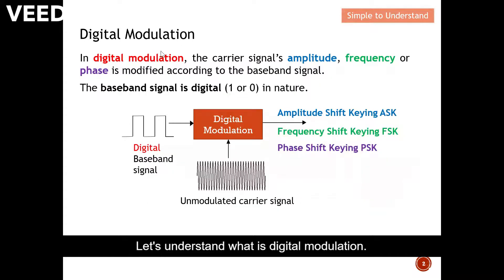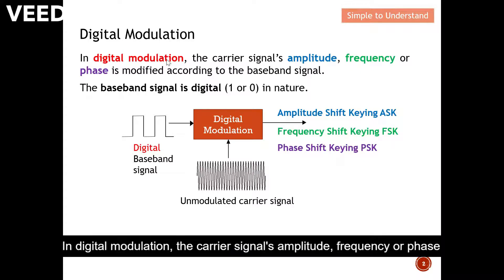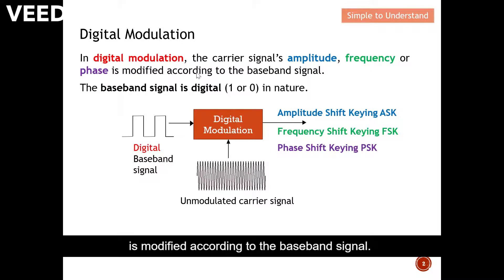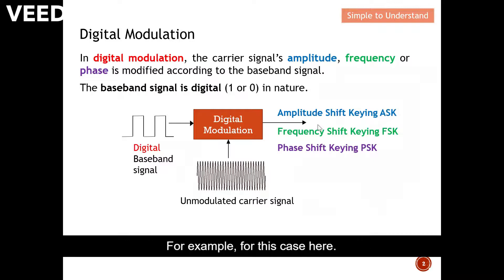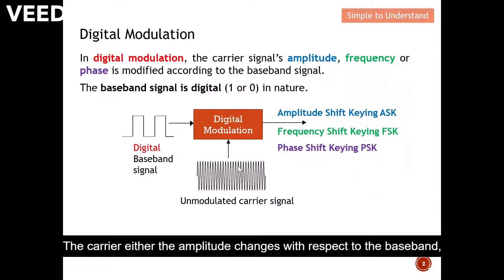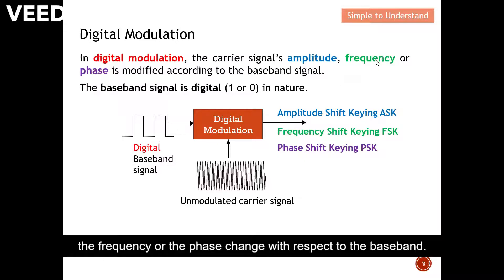So let's understand what digital modulation is. In digital modulation, the carrier signal's amplitude, frequency, or phase is modified according to the baseband signal. Let's take a look at this diagram here. This is the baseband signal, or sometimes we call this our message, and this is the carrier — the carrier helps carry our message.